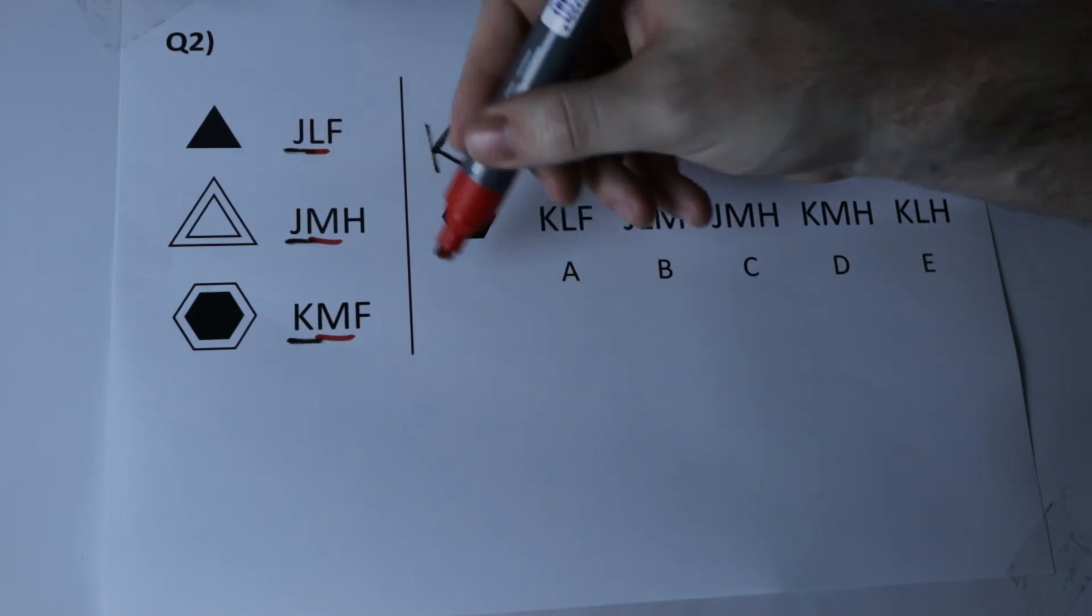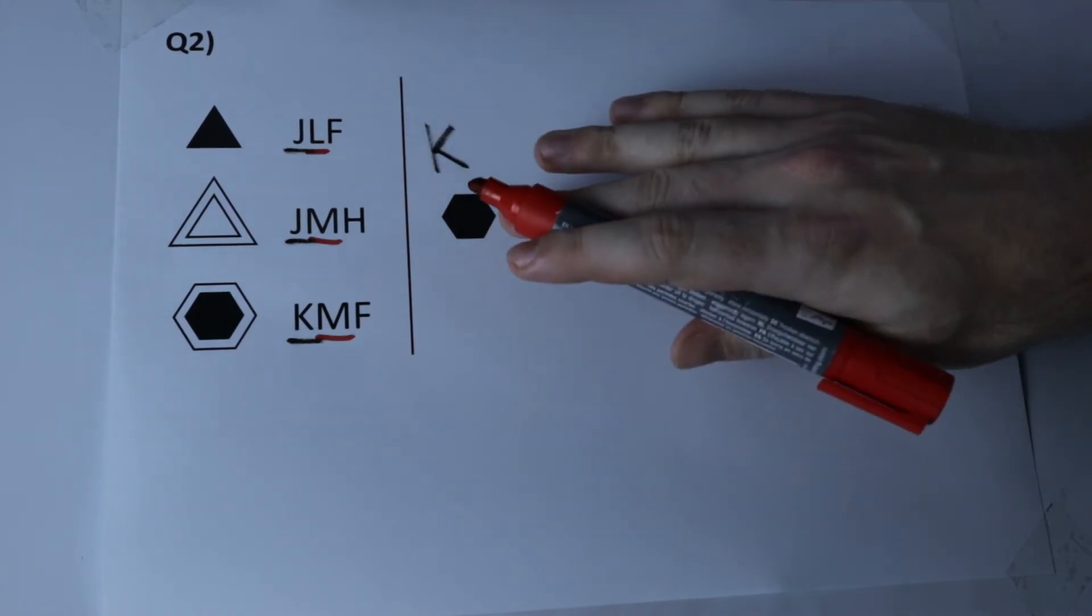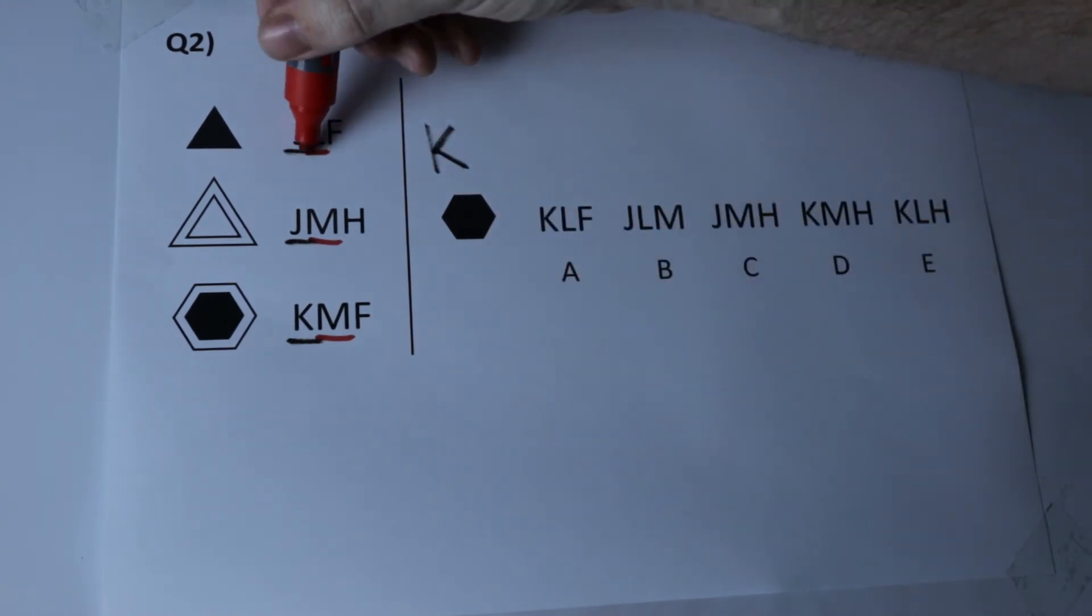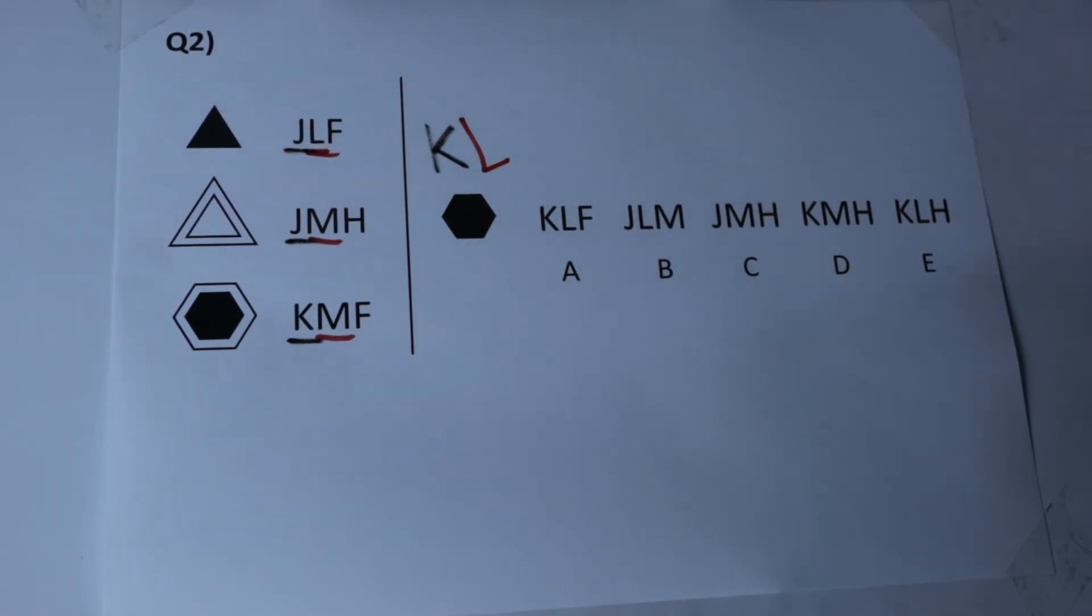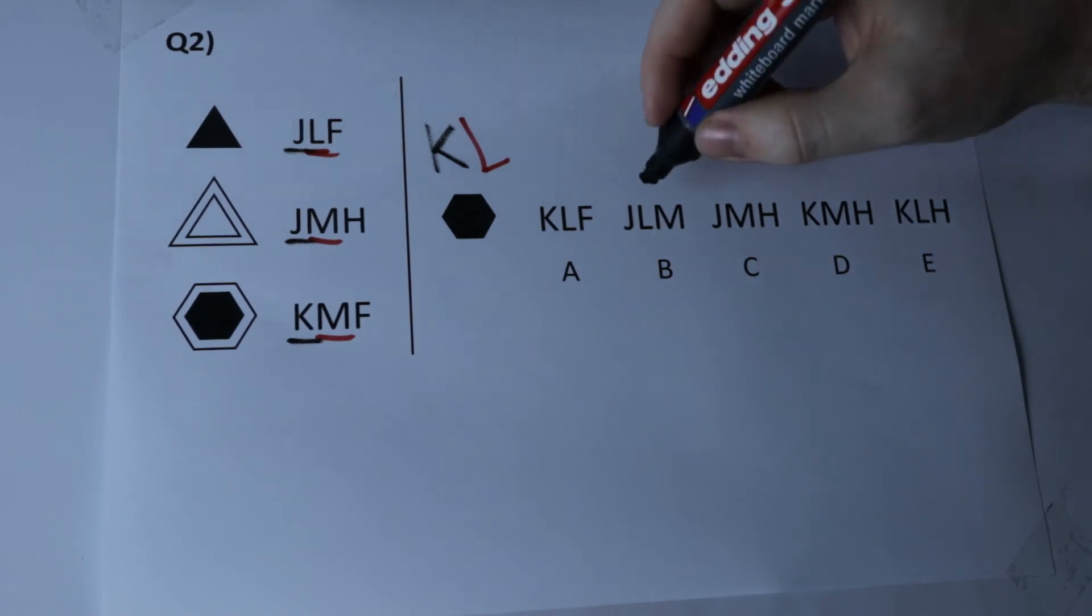If we look at our shape on the right, the hexagon, it's on its own therefore it matches up with the L code. We're going to put an L in the second slot. At this point what I can do is get rid of any answers that it can't be.